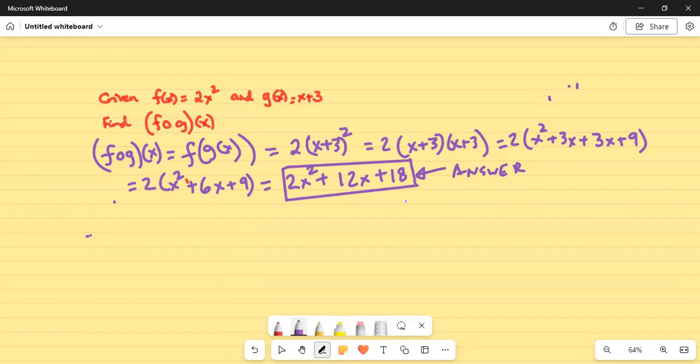That means in f(x), wherever there is x, you substitute g(x), which is x + 3. Since f(x) = 2x², we make it 2(x + 3)². Then we FOIL it and finally get the answer: 2x² + 12x + 18.